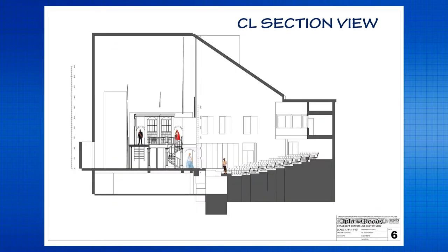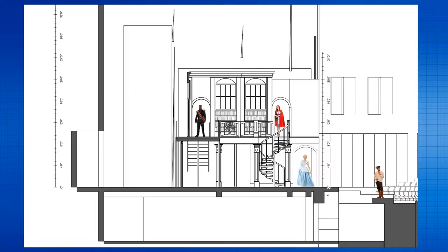The center line section is part of a drafting packet that needs to go to a lot of people — to figure out how high an actor is off the stage floor, the angle for the lighting designer, where speakers can go, the trim height of masking borders. All kinds of information can come from this center line section view. These are a lot easier to generate with a CAD drawing if you build a physical model than to do them by hand the old school way.